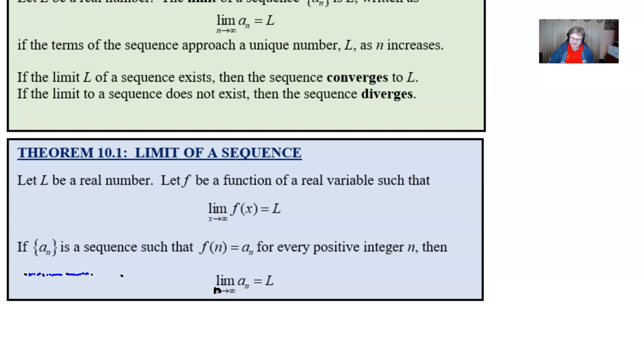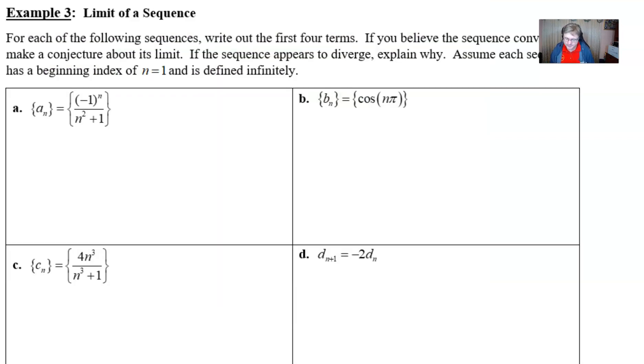So let's take a look at our example three. It says for each of the following sequences, write out the first four terms. And if you believe that the sequence will converge, make a conjecture about its limit. If the sequence appears to diverge, you want to explain why as well. And we're going to assume that each sequence has a beginning index of n equals 1 and is defined infinitely.